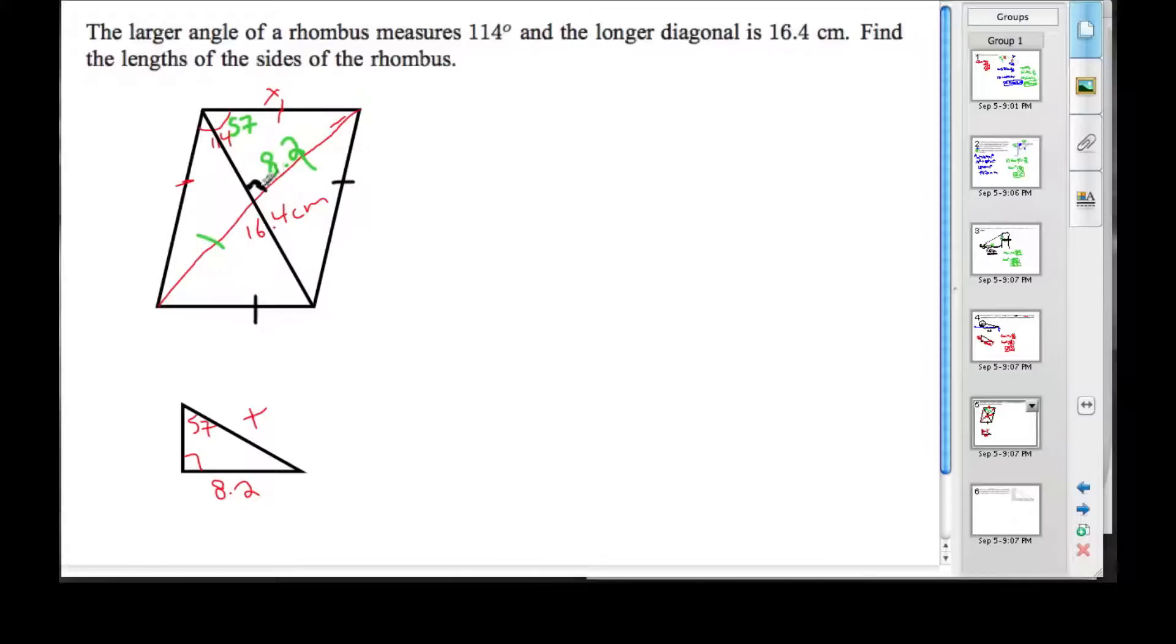Across from the right angle we have an angle here, we have the opposite and we have the hypotenuse. So when we have the opposite and the hypotenuse, the ratio that we choose is sine. So sine of 57 is equal to the opposite over the hypotenuse.